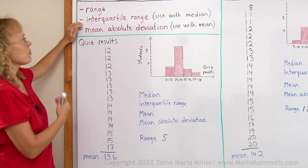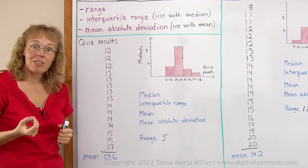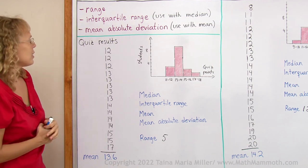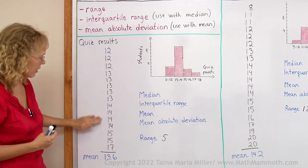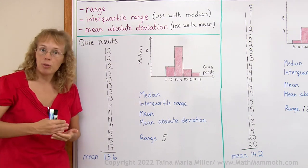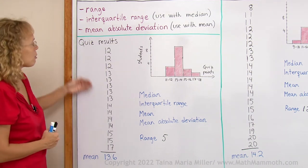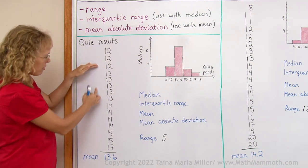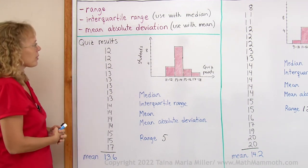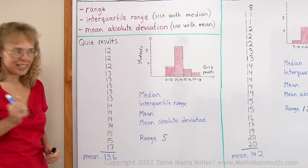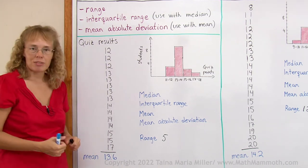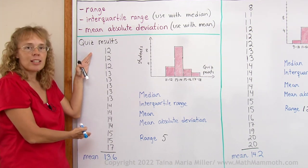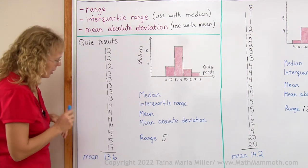Interquartile range. You use it with median. In fact, you have to calculate the median to find the interquartile range. And what it is, is basically we will divide this data into quarters or into fourths. And then we will take the first and third quarter point and subtract and find the range here, find the difference. For that we first need to find the median. To find the median, that's the middlemost number. Or if there's an even number of values, then I take the average of the two middlemost items here.